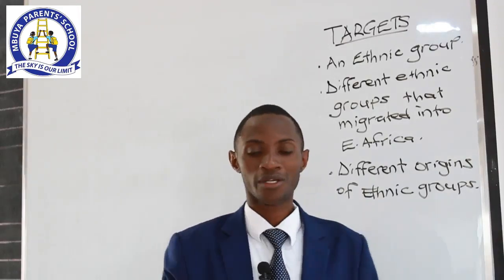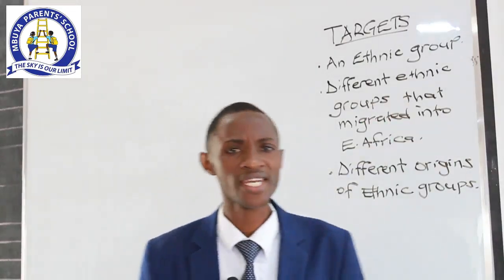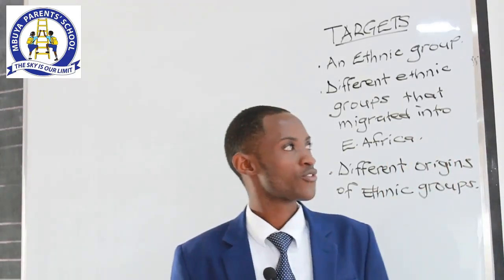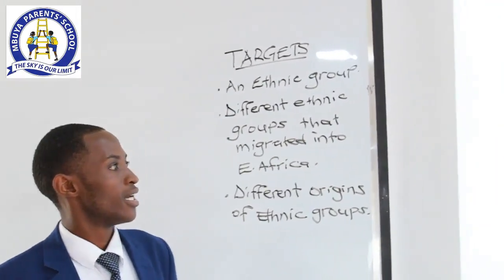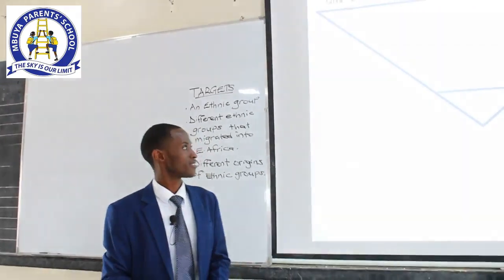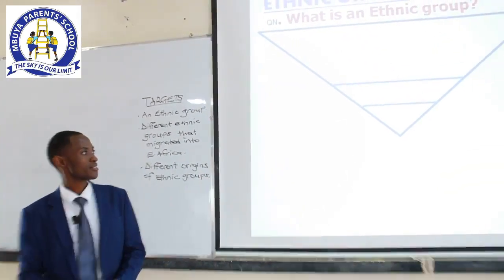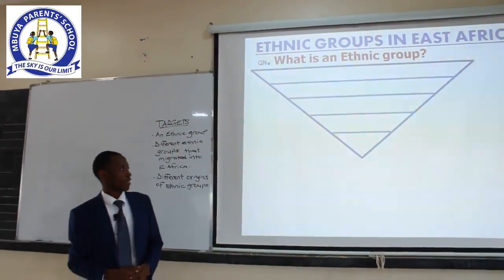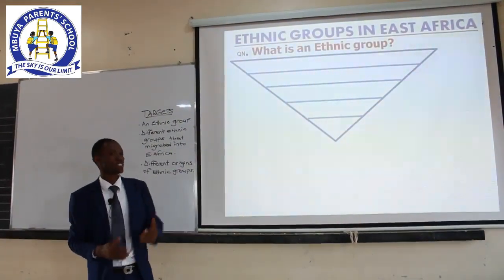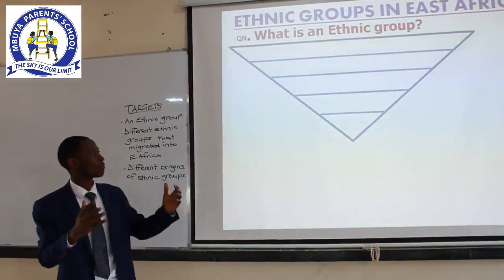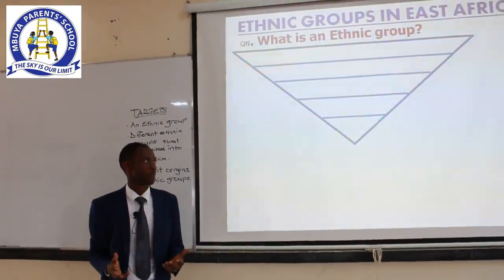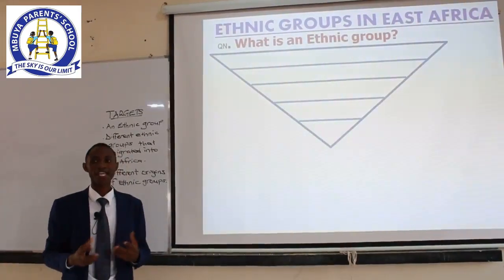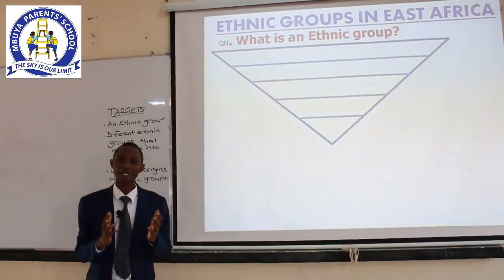Now let us ask ourselves this question: what is an ethnic group? To begin with, we have our triangle — it has got five sections. As the topic is the people, we are looking at the people. When we talk about the people, what comes into your mind? The smallest unit of the people — the way they live, their setting — they live in a family. That is the smallest unit.